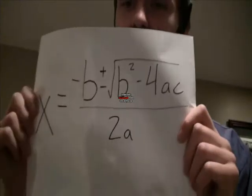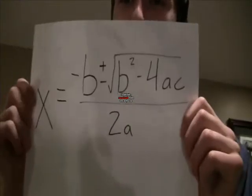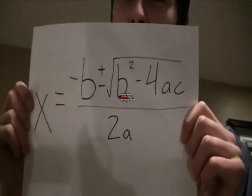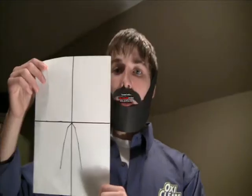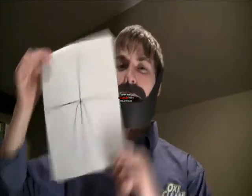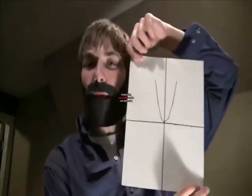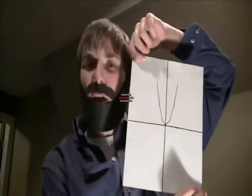The unique design finds both x-intercepts at once, so no more guessing. In just two minutes, you'll have both x-intercepts and be ready to make your parabola. Whether the vertex is high or low, the quadratic formula is the way to go.